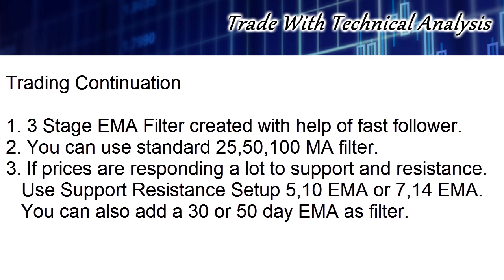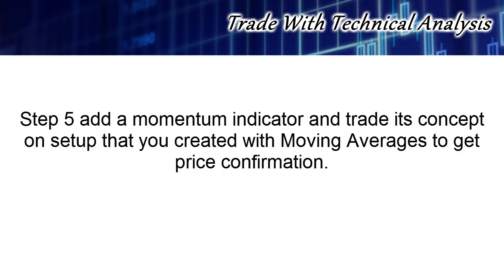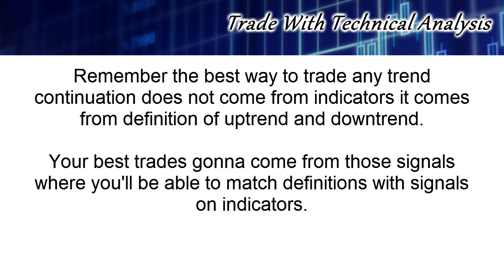In case there is a trend inside a trend, a 3 stage EMA filter is the best option. You can create a filter by adding a fast follower, or in case you don't want to create one you can opt for a standard 25-50-100 day moving average filter. In case while in continuation prices seem to be responding a lot to support and resistance, try adding support and resistance EMA along with 50 or 30 day EMA as a reference line. Step 5 is to add a momentum indicator and trade its concept on the setup that you created with EMA to get price confirmation. Finally, remember the best way to trade any trend continuation does not come from indicators — it comes from the definition of uptrend and downtrend.